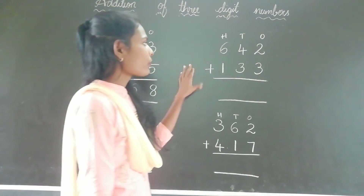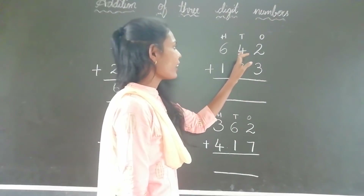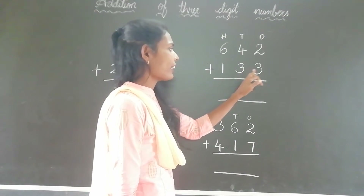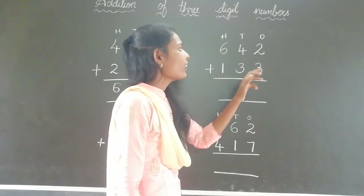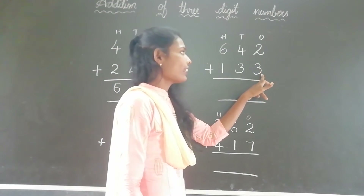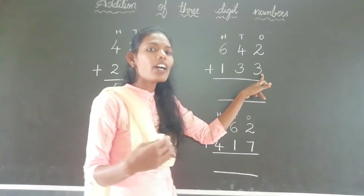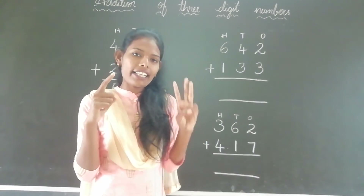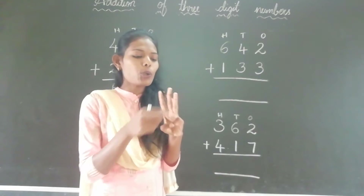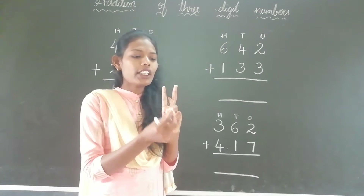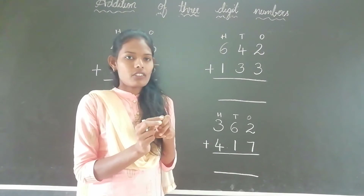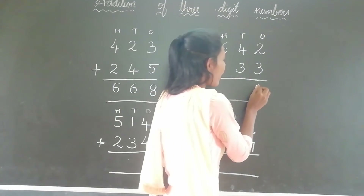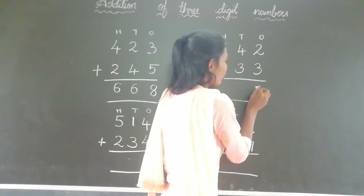OK children, here is the next problem: 642 plus 133. Here 2 and 3 — these digits are at the ones place. So keep 2 in your mind and take 3 fingers. What comes after 2? 3, 4, 5. The answer is 5.